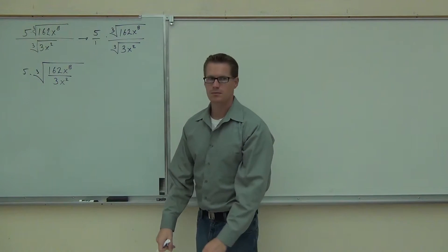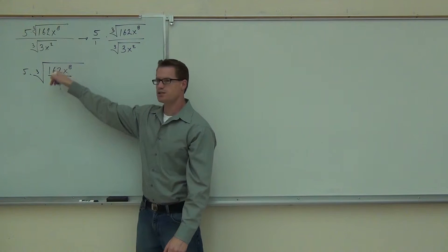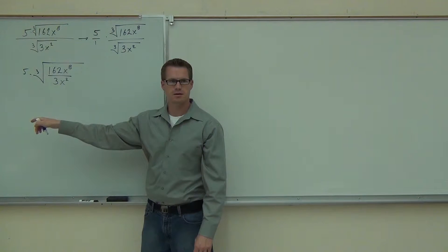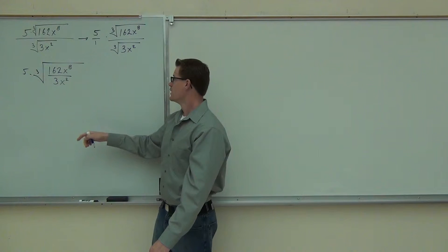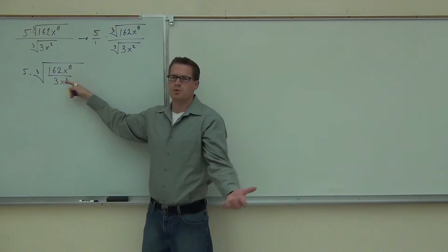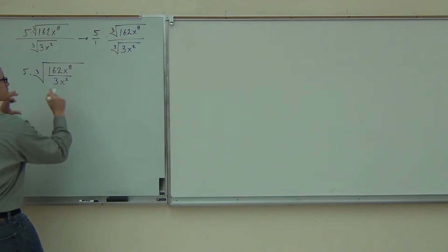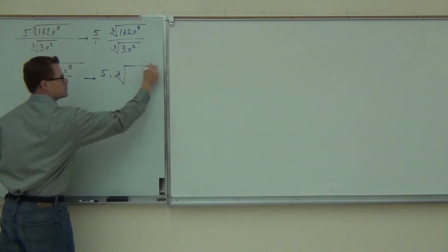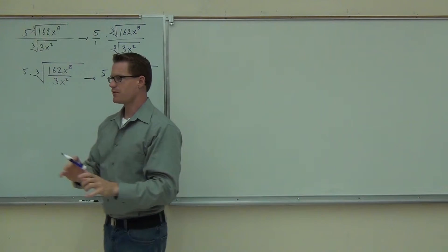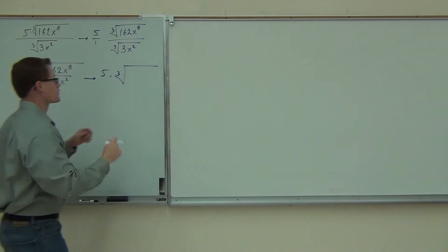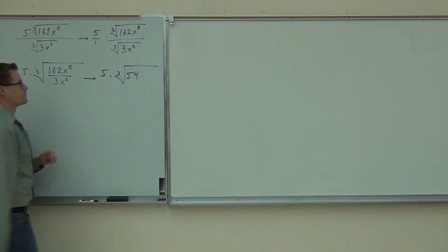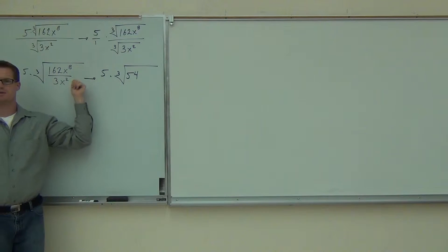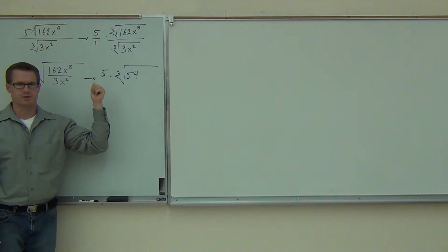Now you can simplify 162 over 3 — that's 54. And can you simplify x to the 8th over x squared? Sure — exponent rules. So under my cube root now, without doing any radical simplification, we're able to make this fraction a whole lot simpler. 162 over 3 is 54, and x to the 8th over x squared gives us x to the 6th — subtract the exponents. Perfect.